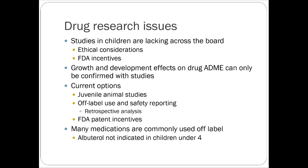The current options for evidence include juvenile animal studies, off-label use and safety reporting, and retrospective analysis. For example, if you have 500 kids who used phenytoin under age two for seizure control, you can look retrospectively at whether it worked, whether dose increases were needed, and how blood concentrations responded. Many medications don't have specific pediatric FDA labeling, but that doesn't mean they can't be used — albuterol is a good example, with no official indication under four years yet it's used in infants for airway issues.